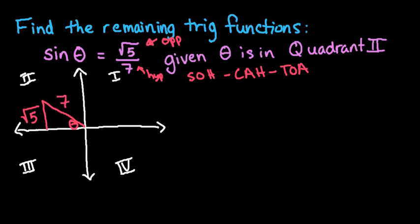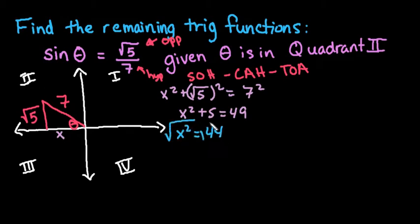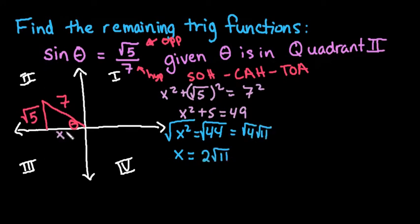The first thing we need to do is find our x-coordinate. If you think about it with ordered pairs, this would be our x and the square root of 5 would be our y-value, and 7 would be our radius or hypotenuse. We use the Pythagorean theorem: x² plus the square root of 5 squared equals 7 squared. Simplifying, x² plus 5 equals 49, so x² equals 44. Taking the square root, 44 breaks down into 4 times 11, giving us 2 square root of 11.